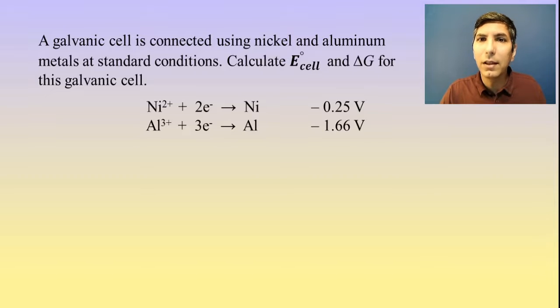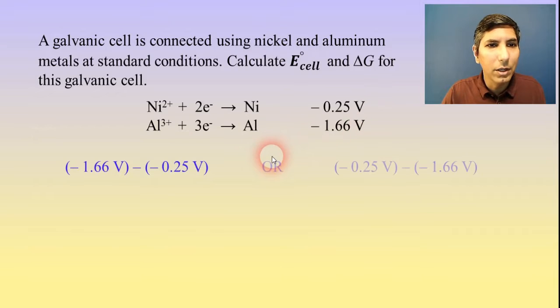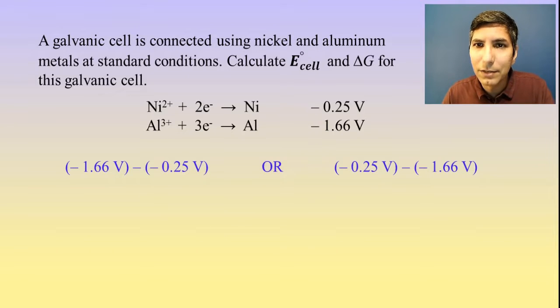Once again, just like in the last video, we have to subtract these two values in the two possible configurations. And the question we have to ask ourselves, since this is a galvanic cell, is E cell has to be positive.